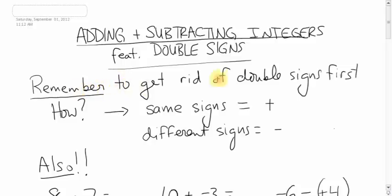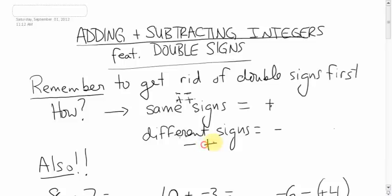The first thing you should do is look at what kind of signs you have. If you have the same signs — like two negatives or two positives — they will always become one positive. Two negatives make a positive; two positives make a positive. So a double negative simplifies to a positive, and a double positive simplifies to a positive. If you have different signs, like a minus and a plus, simplify them into a single negative sign.